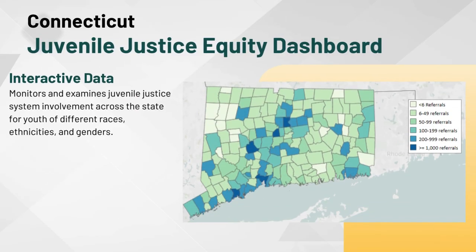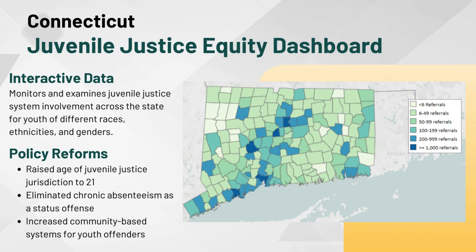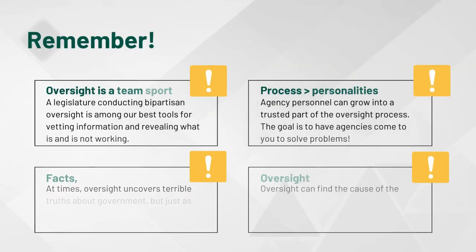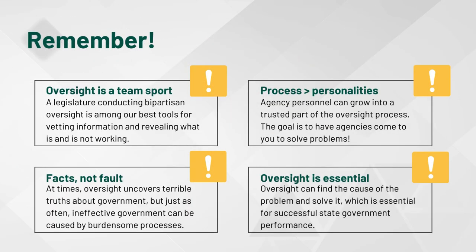In Connecticut, a partnership with a university is gathering and sharing data on juvenile justice. A juvenile justice equity dashboard monitors and examines juvenile justice system involvement across the state for youth of different races, ethnicities, and genders. Connecticut's oversight of juvenile justice influenced policy reforms, including raising the age of juvenile justice jurisdiction to 21, elimination of chronic absenteeism as a status offense, and a rise of community-based systems for youth offenders. Oversight is a team sport — avoid the echo chamber and pursue a bipartisan approach. In a nation struggling with where to turn for truth on controversial topics, a legislature conducting bipartisan oversight is among our best tools for vetting information and revealing what is and is not working in government.